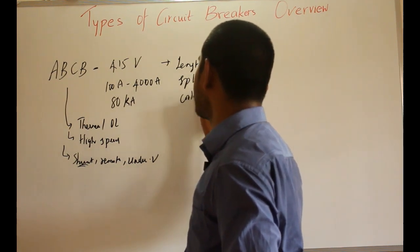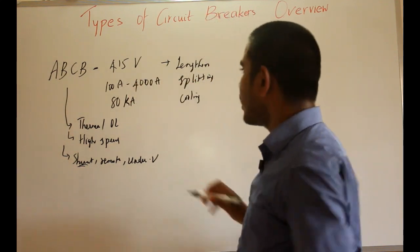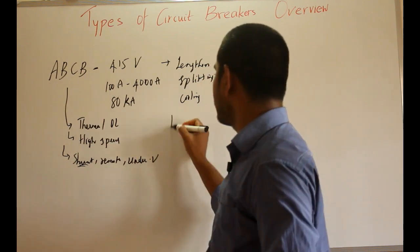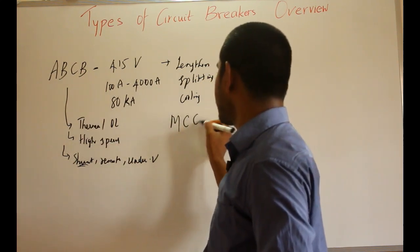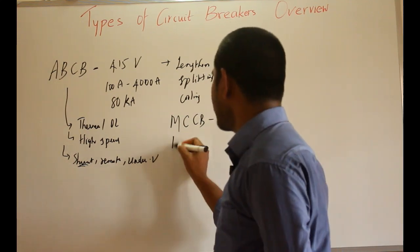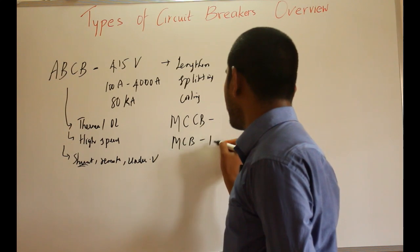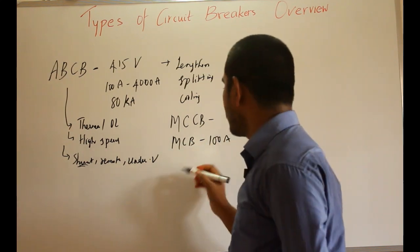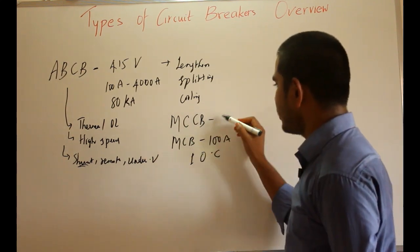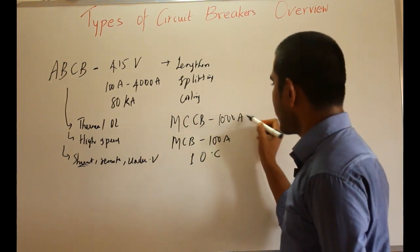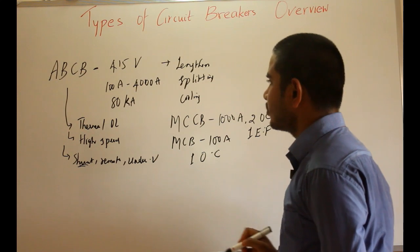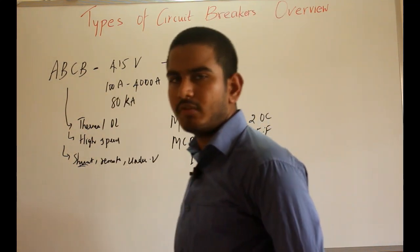Arc quenching in the air break circuit breaker can be done by lengthening the arc, splitting the arc, and cooling the arc. The latest version of the ABCB is the molded case circuit breaker (MCCB). Miniature circuit breakers (MCB) are used for up to 100 amperes with only one over-current protection, whereas MCCB is used for up to 1000 amperes and has two over-current protections and one earth fault protection.